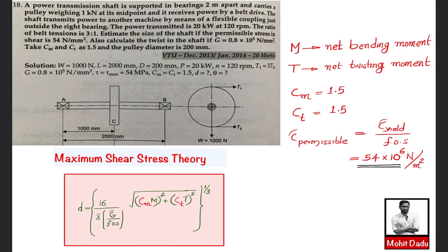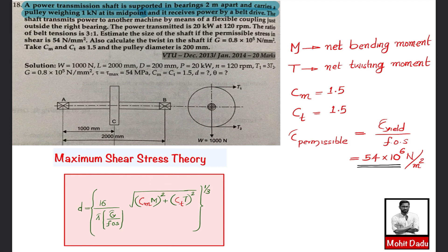In this video we will be solving a simple problem on the design of a shaft. A power transmission shaft is to be designed, supported in bearings two meters apart. It carries a pulley weighing one kilonewton, receives power by a belt arrangement running horizontally. The power transmitted is 20 kilowatts at 120 rpm.